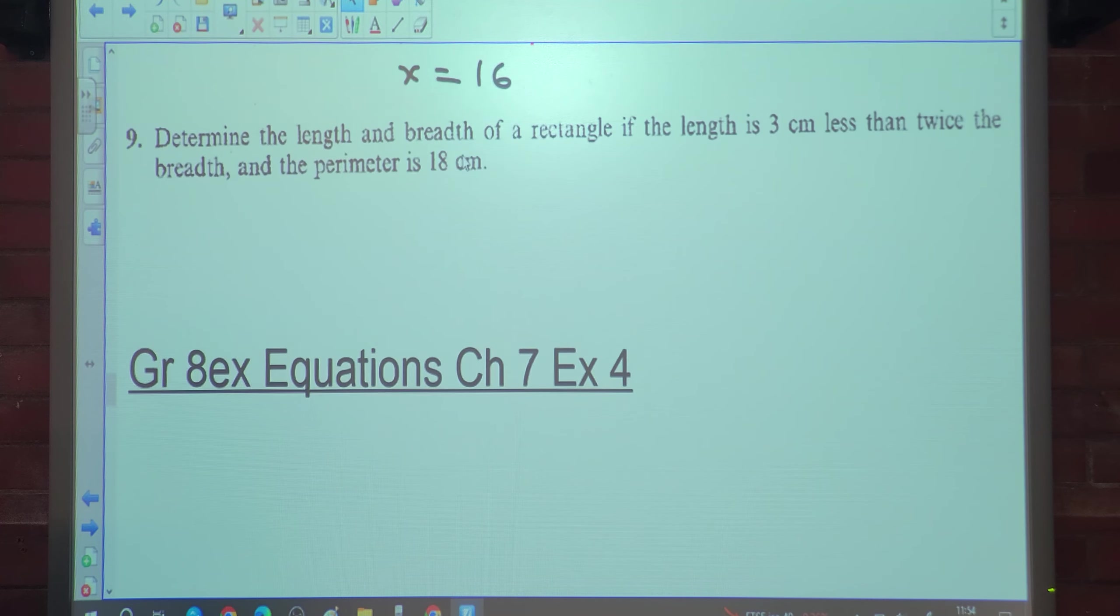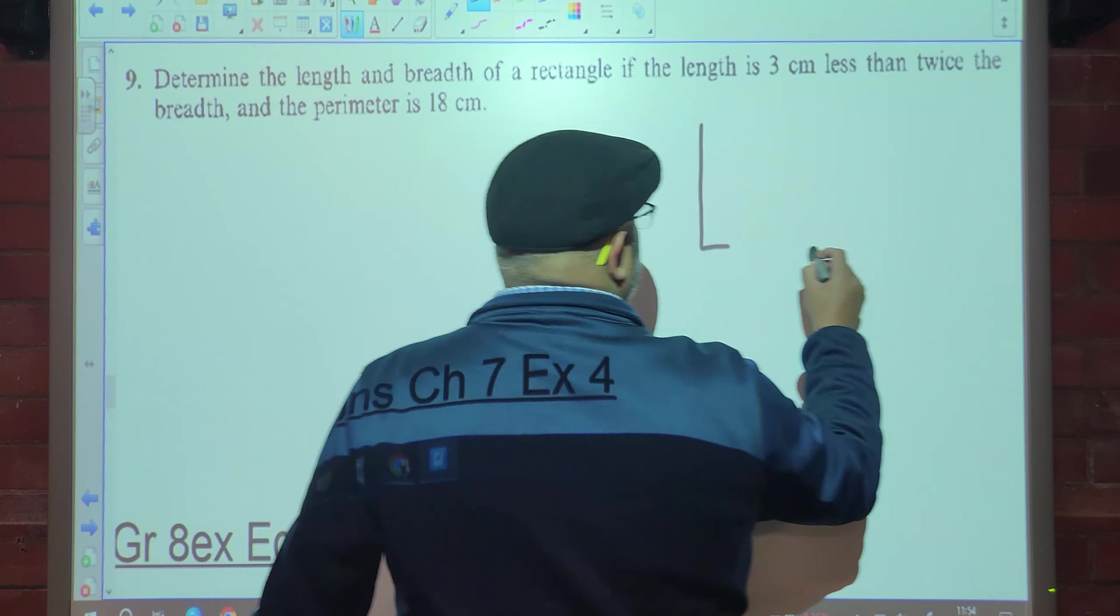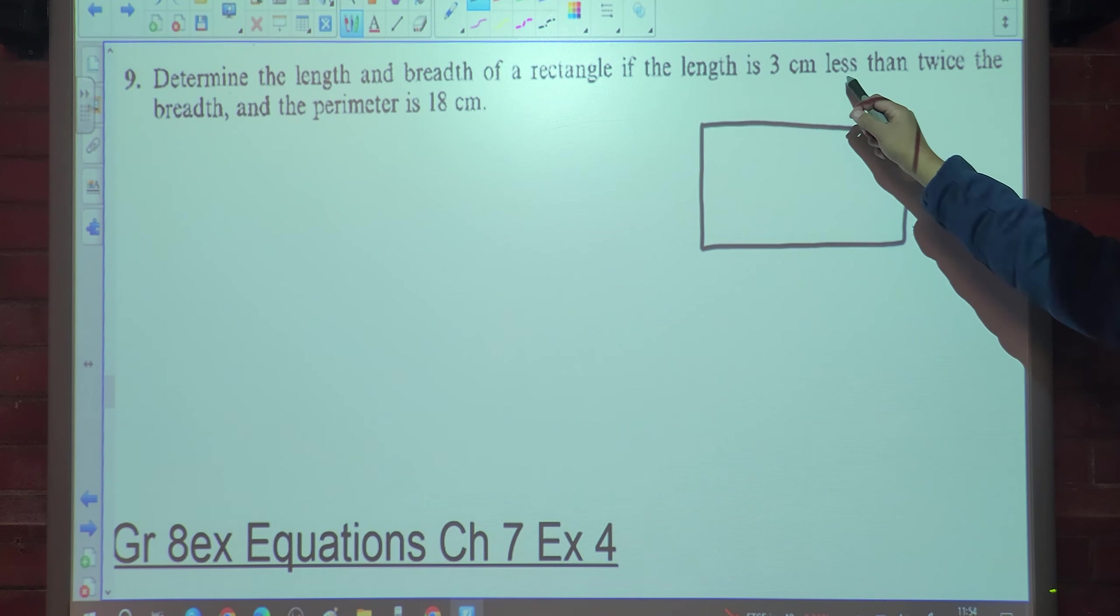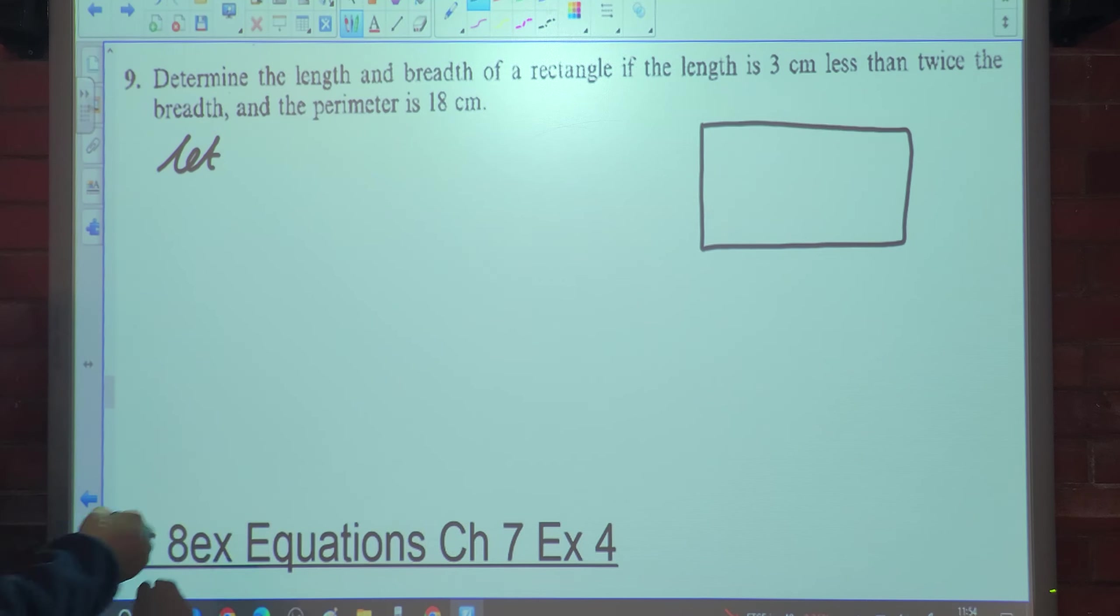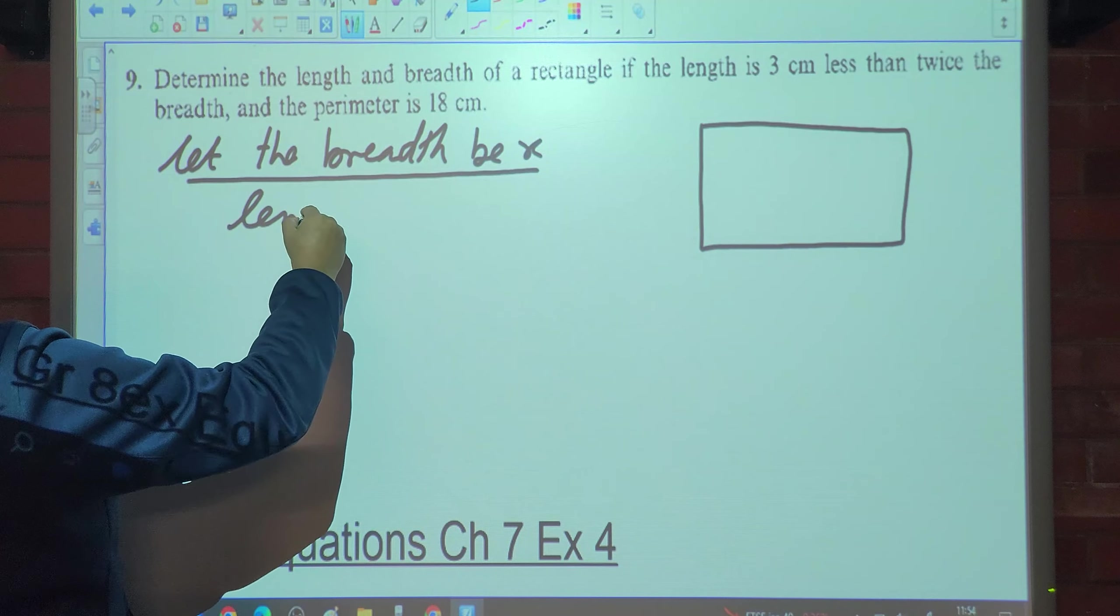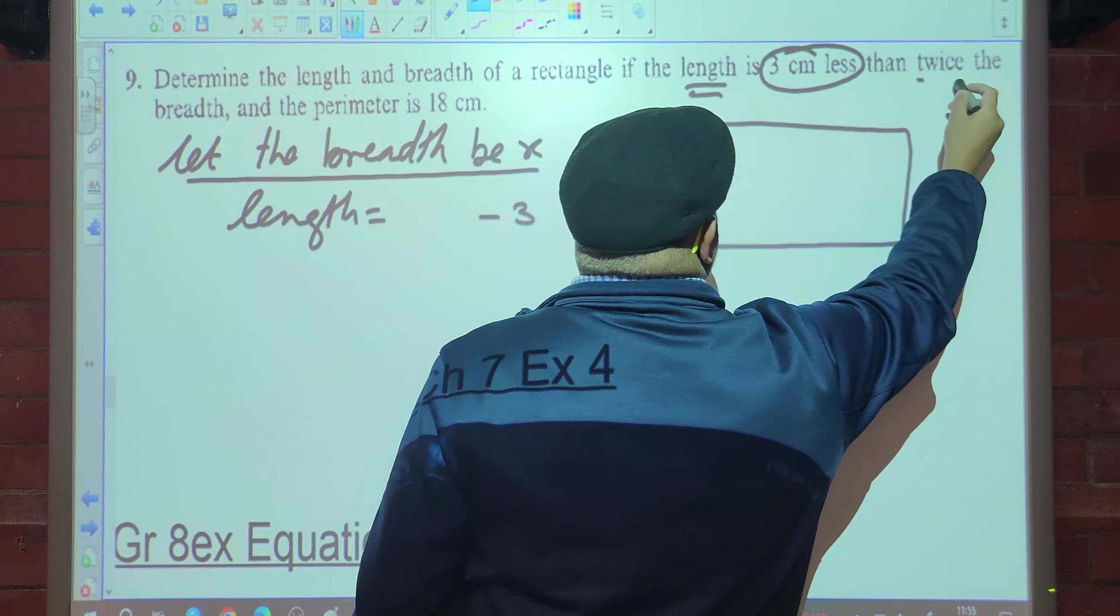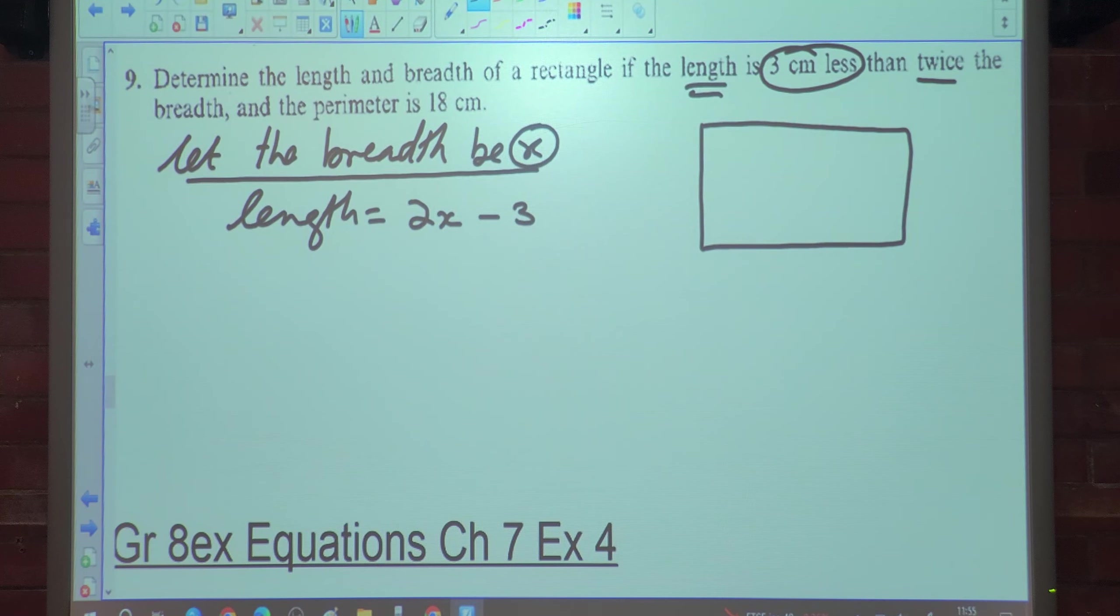Number 9. You are told determine the length and breadth of a rectangle. Which one of the two is smaller, the length or the breadth? Normally the breadth is smaller. Let the breadth be x. So what would the length be? We are told that if the length is 3 centimeters less than twice the breadth, the breadth is x, so it's 2x minus 3. You guys understand?